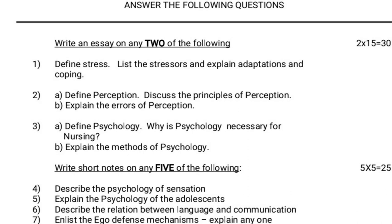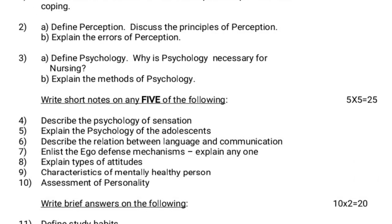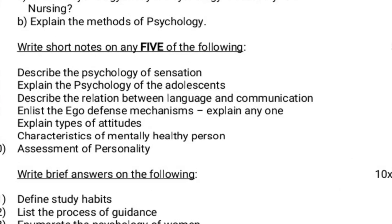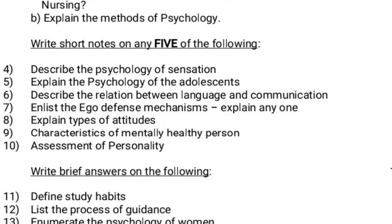Next, write short notes on any 5 of the following. For essays, answer 2 out of 3; for short notes, there are 7 questions and you answer only 5. Fourth question: describe the psychology of sensation. Fifth question: explain the psychology of adolescence.